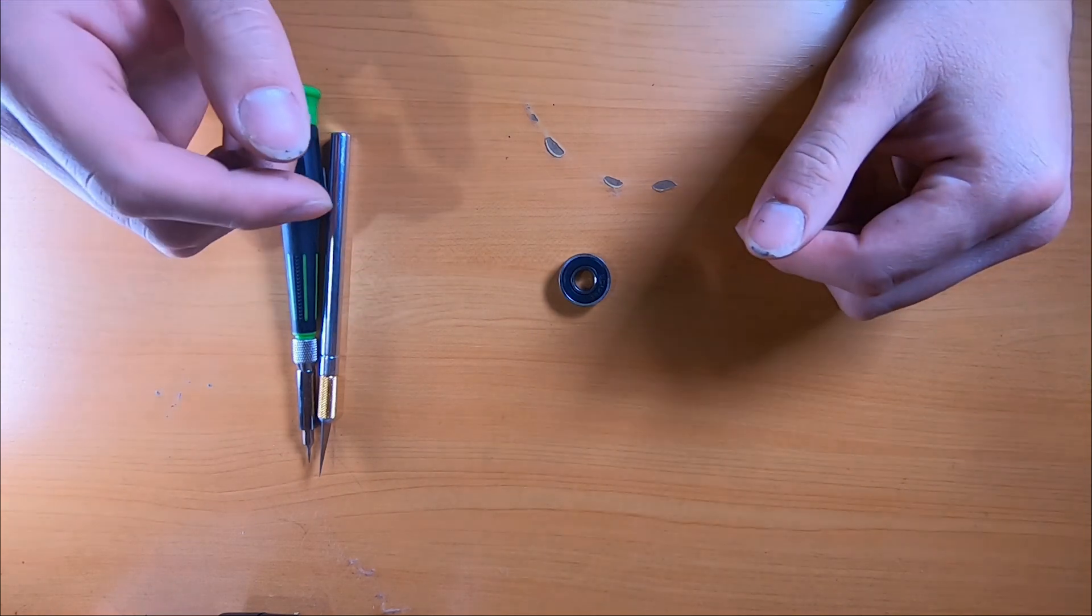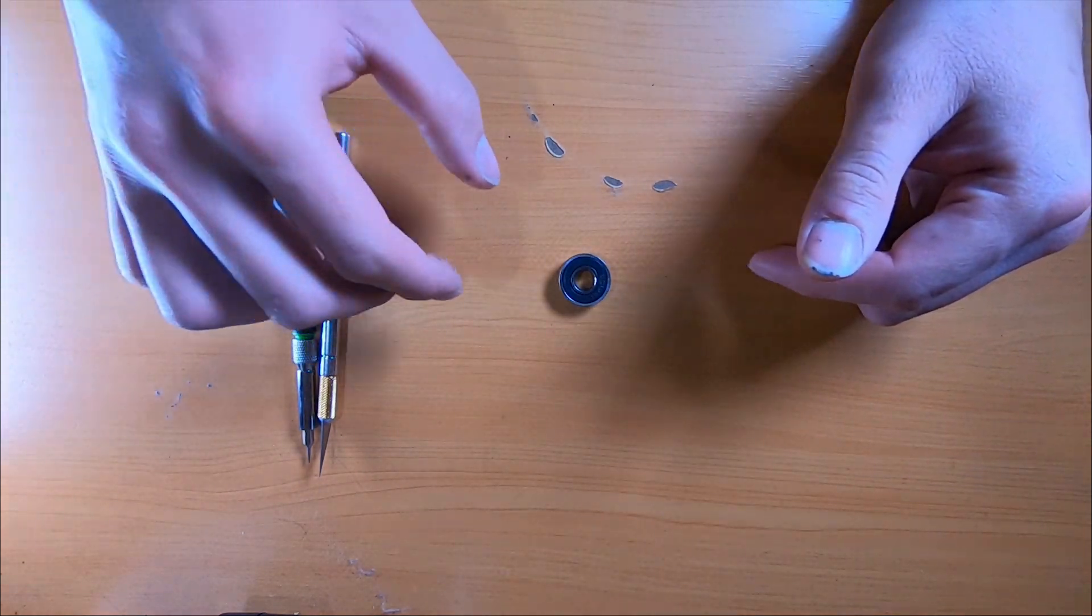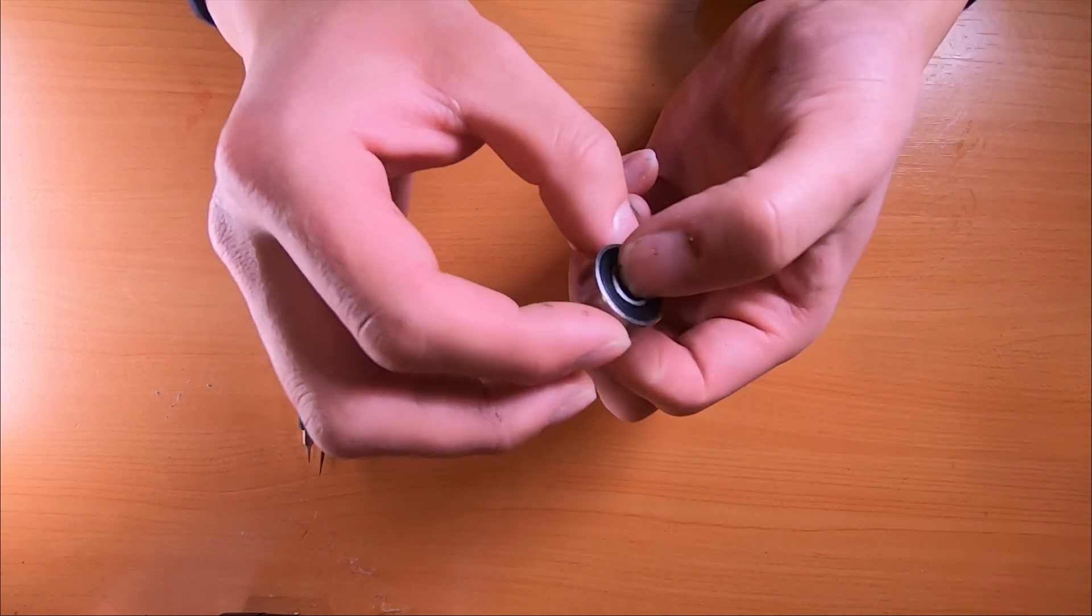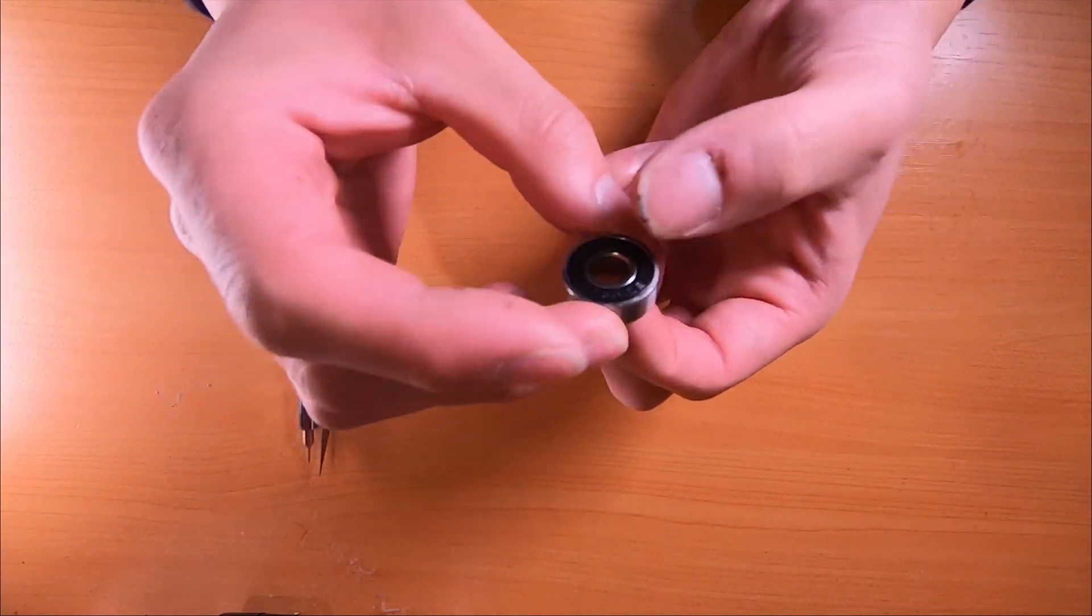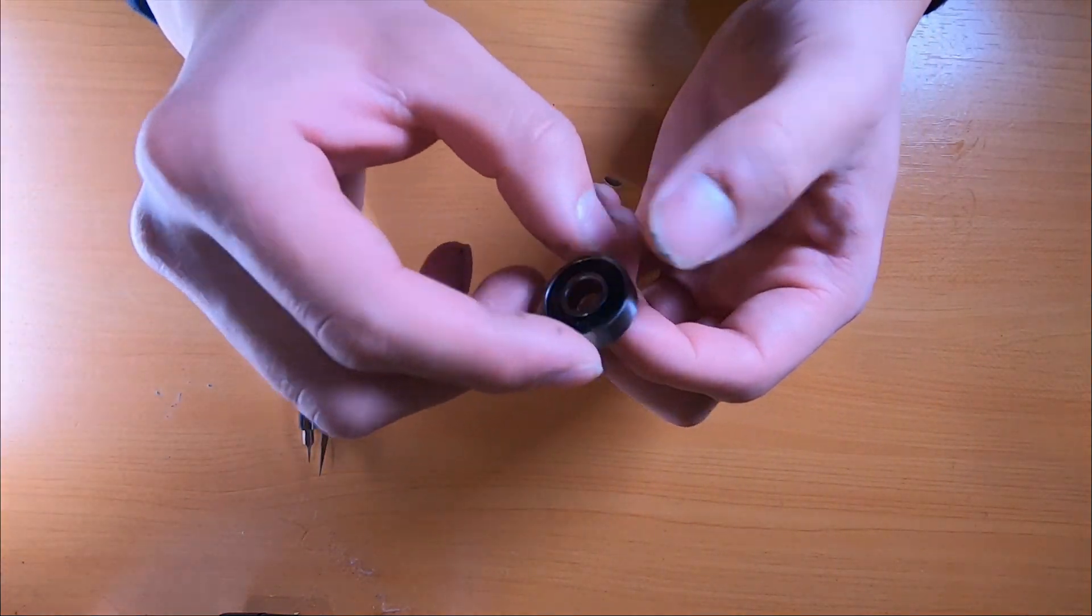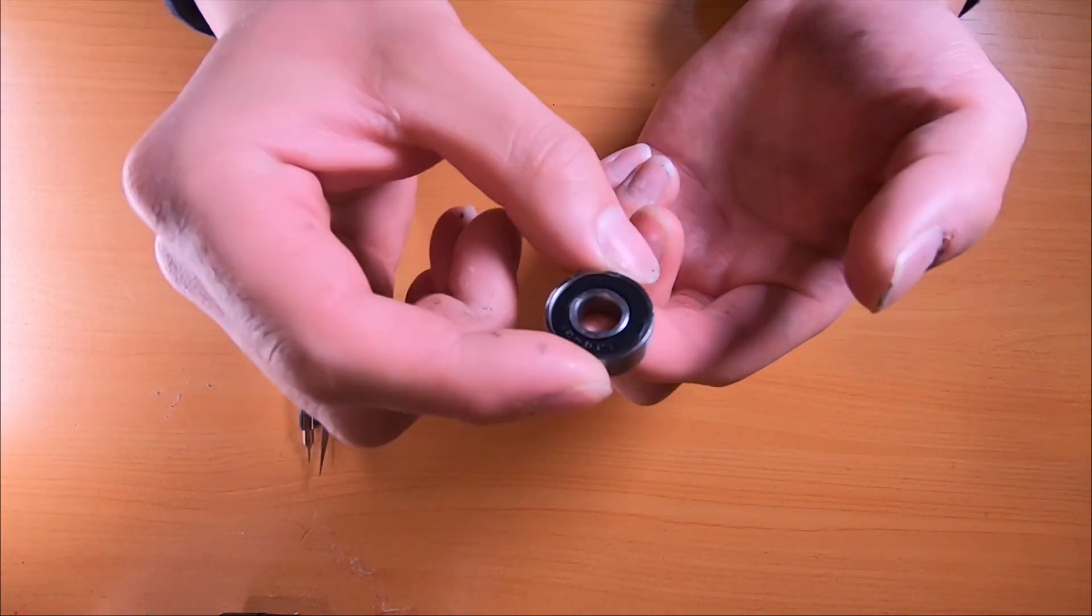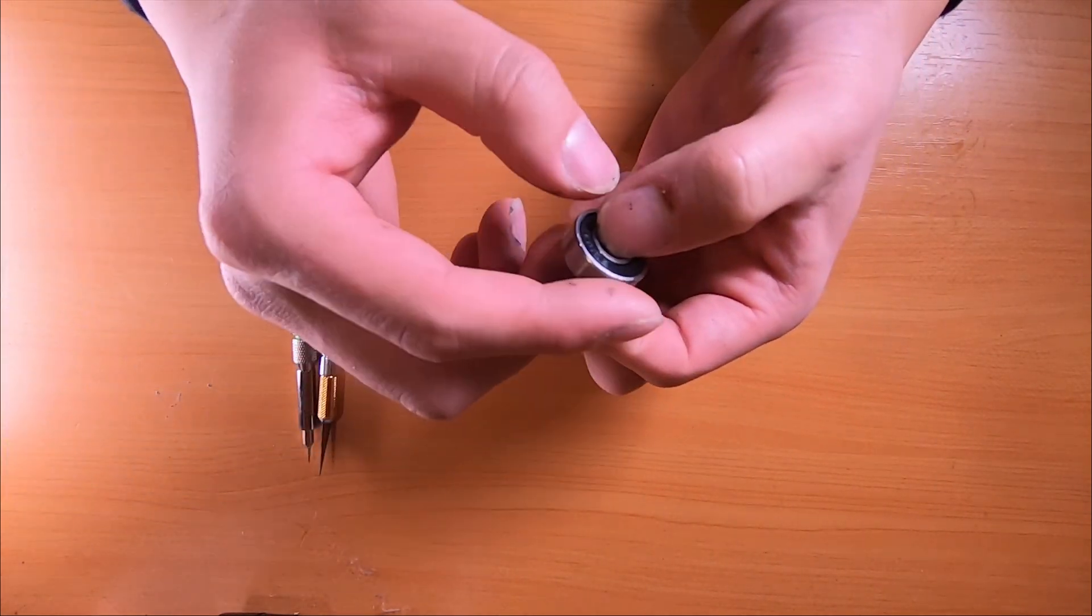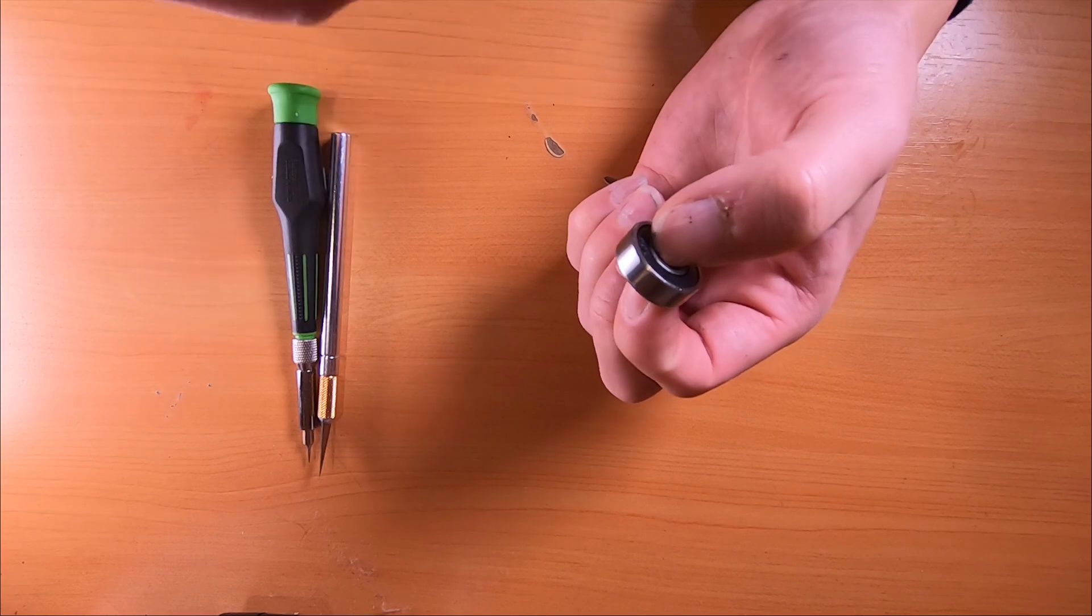Okay, so while we wait for the printed parts to finish up, I'm going to go ahead and show you the optional step of processing these bearings. Now, these are the 608 bearings that I showed you earlier. And while this is an optional step, I highly recommend you do it. So these bearings are filled with some sort of petroleum grease.